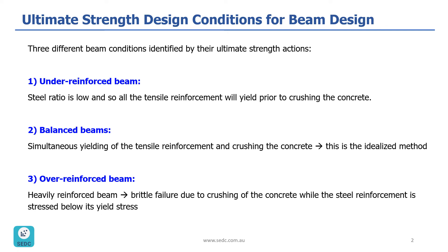The second condition, which is the balanced beam, is basically the simultaneous yielding of tensile reinforcement and crushing of the concrete. This is an idealized condition and is used to differentiate between under-reinforced and over-reinforced beams.